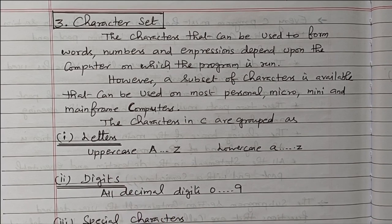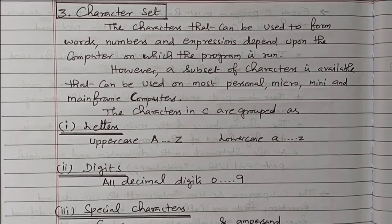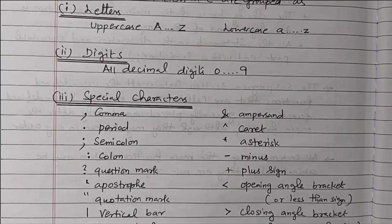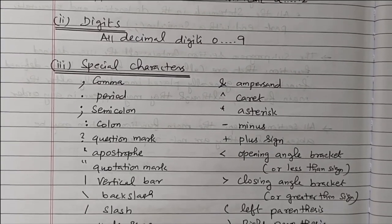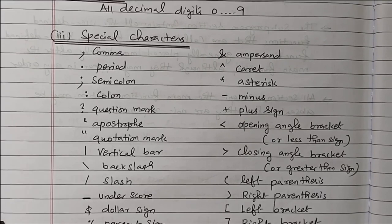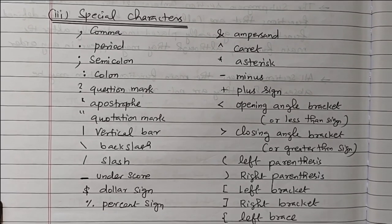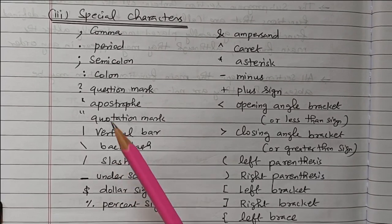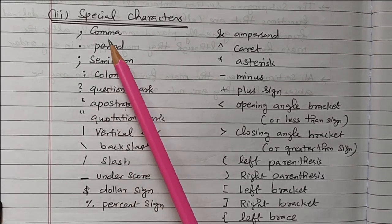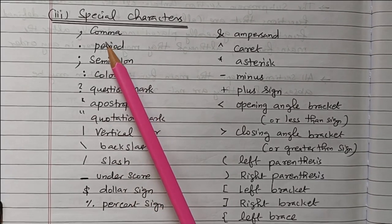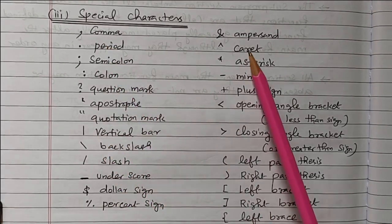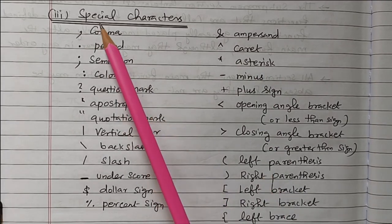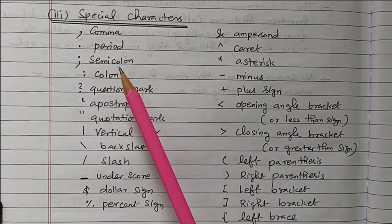Then letters and digits. The third one is the special characters. Apart from the letters and the digits, the third category is the special characters. We will see the special characters one by one. These are all coming under the character set in the C program as special characters.